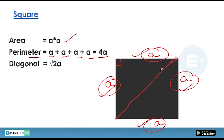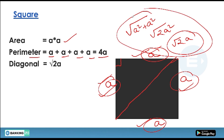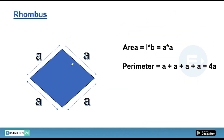For the diagonal of a square: drawing a diagonal creates a right-angle triangle with both legs equal to 'a'. Applying Pythagoras theorem gives diagonal = √(a² + a²) = √(2a²) = √2 · a. So the diagonal of a square is √2 into a.